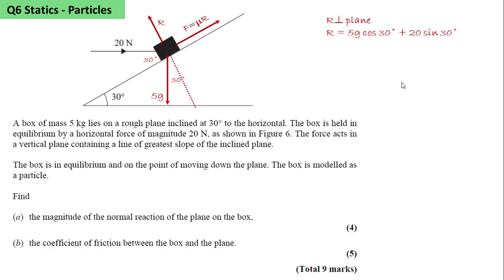Resolving forces perpendicular to the plane: R equals 5g cos 30 degrees plus 20 sin 30 degrees. 20 sin 30 being the component of the 20 Newton force acting perpendicular into the plane. From this we can calculate that the normal reaction is 52.4 Newtons.